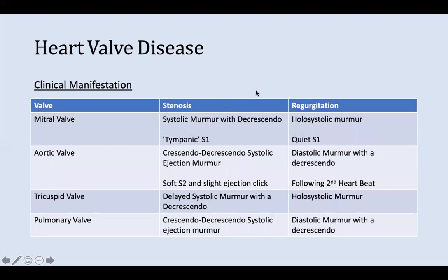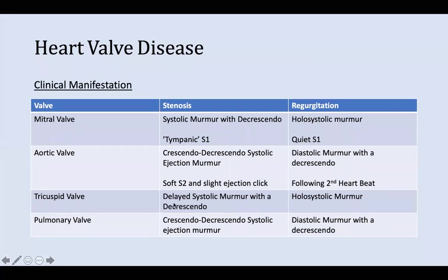These are the clinical manifestations — a very important table. For mitral valve stenosis, there's a diastolic murmur with a decrescendo and a loud tympanic S1. For mitral regurgitation, there's a holosystolic murmur and a quiet S1. This table from AMBOSS is a nice summary of the clinical manifestations of each valve — it's the table used to study for the finals.